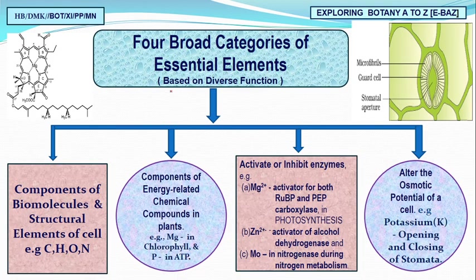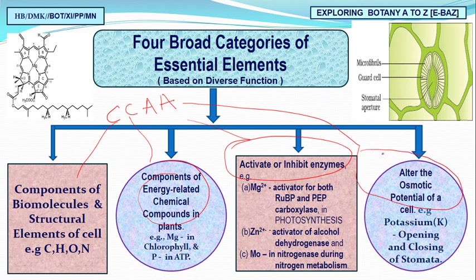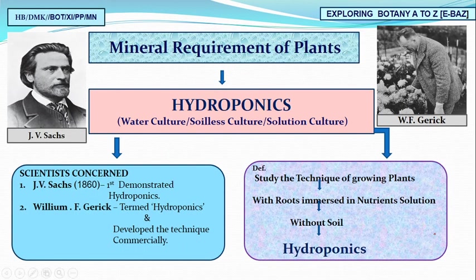We also have four important beneficial elements with the mnemonic SENA SECO. There are four broad categories of essential elements — C, C, A, A: component of biomolecules and cell structure; energy-related compounds; activators of enzymes; and finally, elements involved in cellular potential regulation, like potassium involved in stomatal movement.